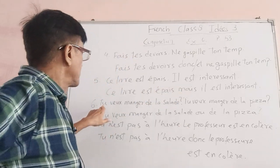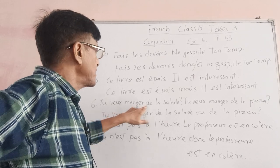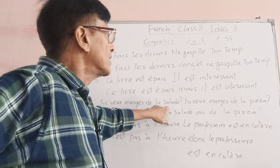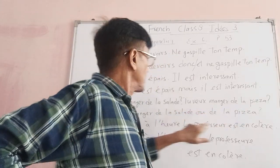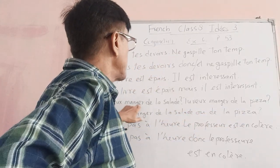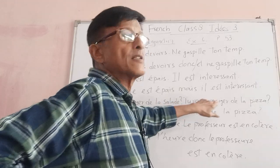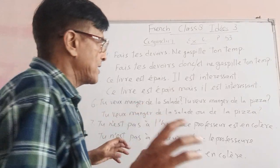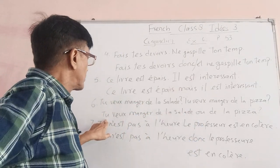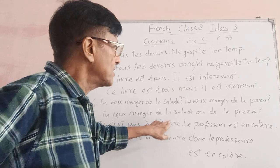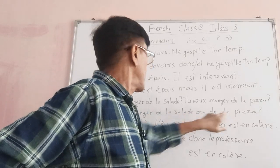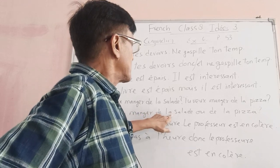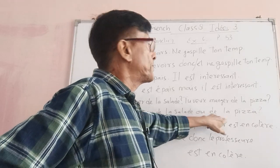Then comes six. 'Kyu va mojhe dala sala vasha?' and 'Kyu va mojhe dala pizza?' means: you wish to eat salad, or you wish to eat pizza? You conjugate them into one sentence: 'Kyu va mojhe dala sala vasha, oom, dala pizza' — you wish to eat salad or pizza.